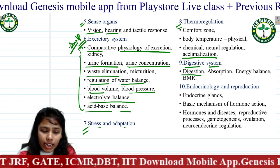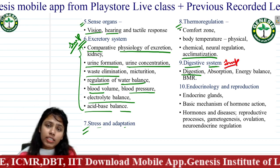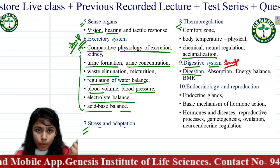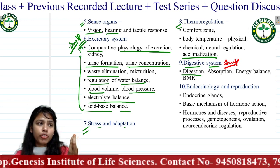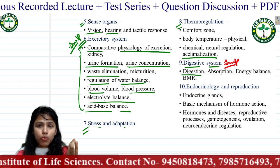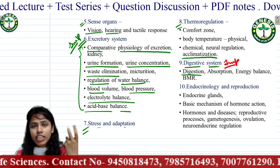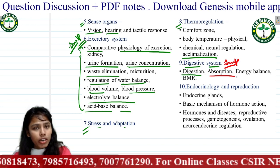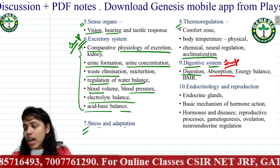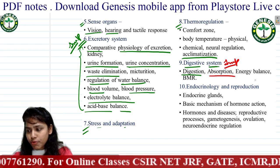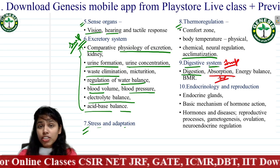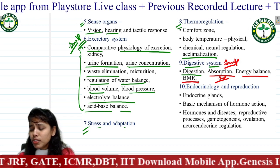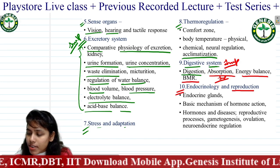The digestive system is also a very important topic for CSIR — many questions are asked. You will learn what digestion is, which enzyme digests which molecule — enzymes for carbohydrates, amino acids, and proteins. Related to absorption, you will learn how glucose and fructose are absorbed, which is a highly tested area. Energy balance and BMR will also be covered.